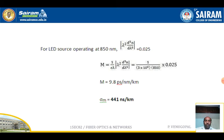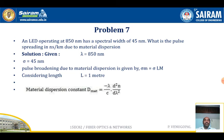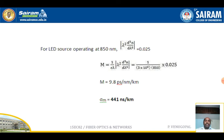The result is M = 9.8 picoseconds per nanometer per kilometer. Therefore, sigma_m = sigma × M = 45 × 9.8 = 441 nanoseconds per kilometer. So for the LED operating at 850 nanometers with a spectral width of 45 nanometers, the pulse spreading due to material dispersion is 441 nanoseconds per kilometer.